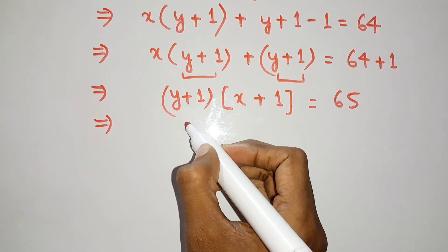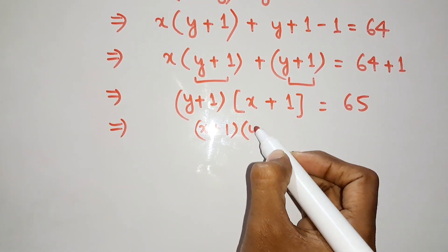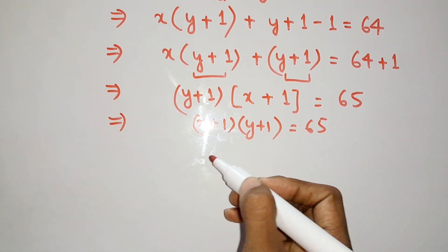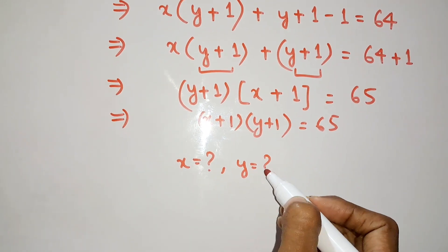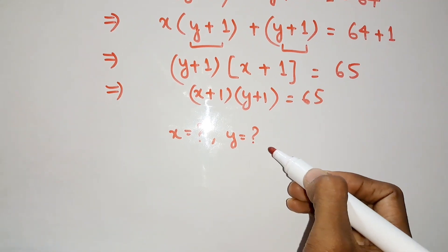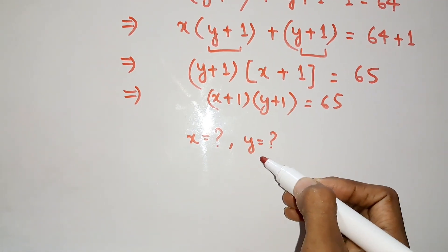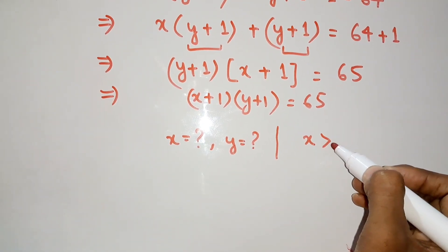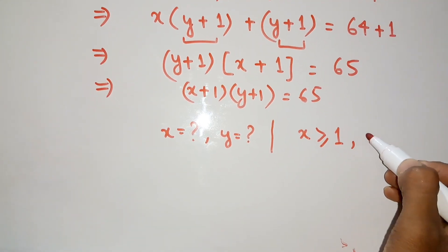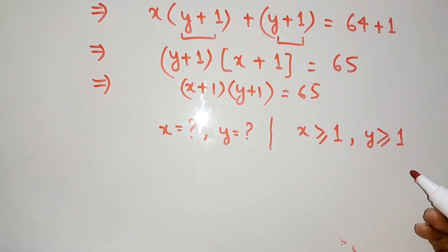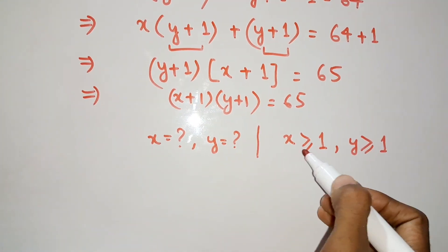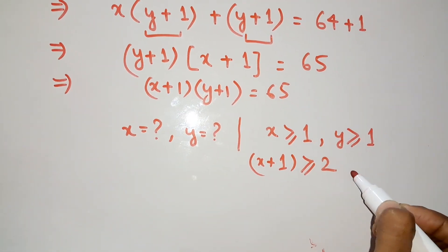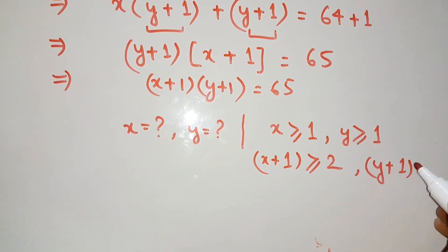We can see that (y plus 1) is common in both terms, so factoring it out gives (x plus 1) multiplied by (y plus 1) equals 65. Now we need to find x and y as positive integers. Since x ≥ 1, the value of (x plus 1) starts from 2, and similarly (y plus 1) starts from 2.